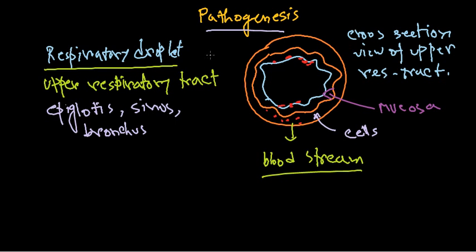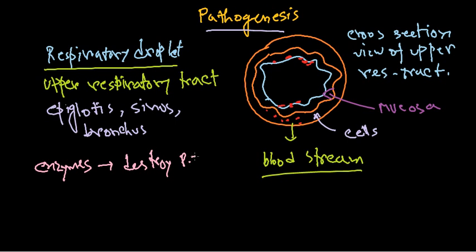Haemophilus influenzae are Gram-negative organisms. They can be rod-shaped, coccobacillus-like, or spiral — they are actually pleomorphic in structure. Their mechanism of spreading involves secreting certain enzymes. These secreted enzymes will destroy the respiratory tract mucosa quickly and efficiently.